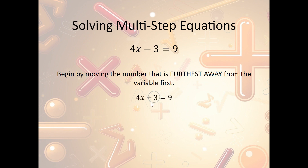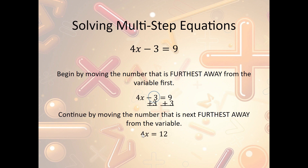So we'll go ahead and add 3 to both sides. Negative 3 plus 3 is 0, so we're left with 4x. And 9 plus 3 is 12, so we're left with 4x is equal to 12. Now we get rid of the next number. The only number left is the 4, so we divide both sides by 4. And we get x by itself is equal to 12 divided by 4, which is 3. So in this case, we get x equals 3.